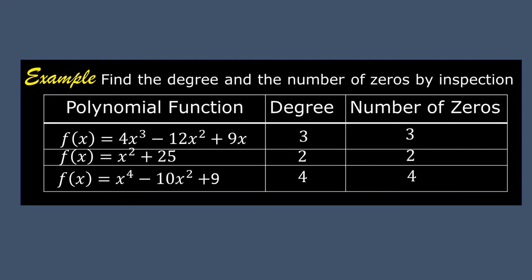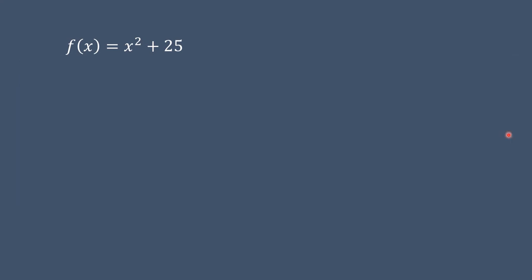The second polynomial function is f(x) = x² + 25. We said the number of zeros is equal to 2. Let us find out if this is true. Set x² + 25 = 0. Transpose positive 25 to the other side, changing its sign from positive to negative, giving x² = -25.